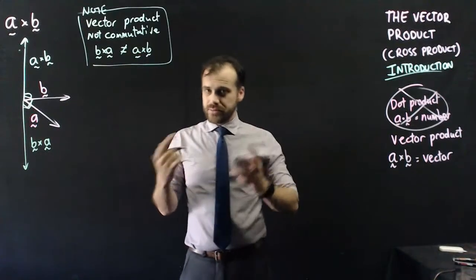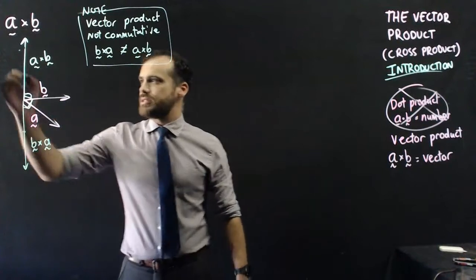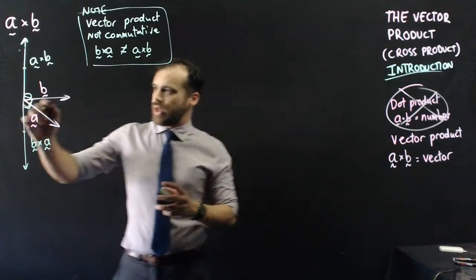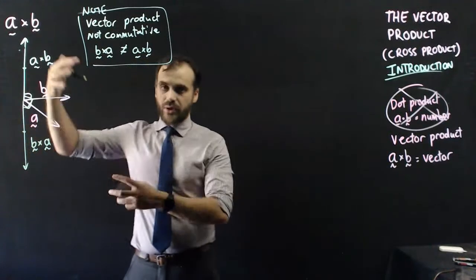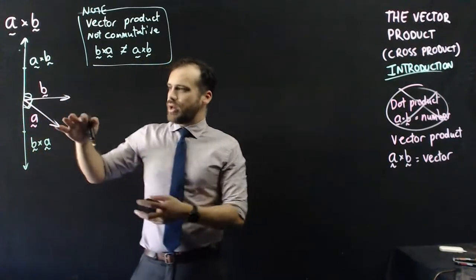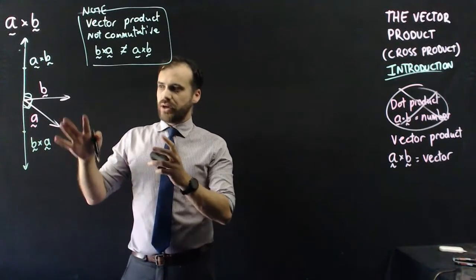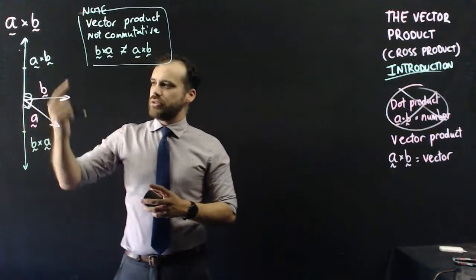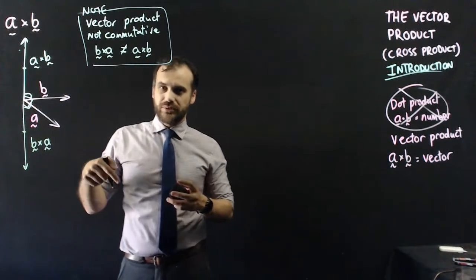There are some similarities though. The length of B times A is the same as the length of A times B. They also both form right angles with A and B. But you need to be able to figure out whether A times B is going to go in that direction, or in the other direction.